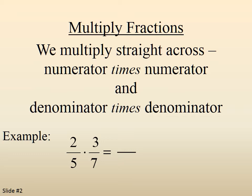Example, 2 fifths times 3 sevenths. So 2 times 3 across the top gives us 6. 5 times 7 across the bottom gives us 35. So we have 6 over 35.